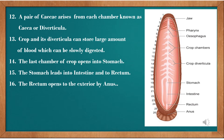The last chamber of the crop opens into the stomach, and the stomach leads into the intestine. The intestine leads to the rectum, and the rectum opens to the exterior by the anus. So the complete alimentary canal of leech is: mouth, pharynx, esophagus, crop chambers, crop diverticula, stomach, intestine, rectum, and anus.